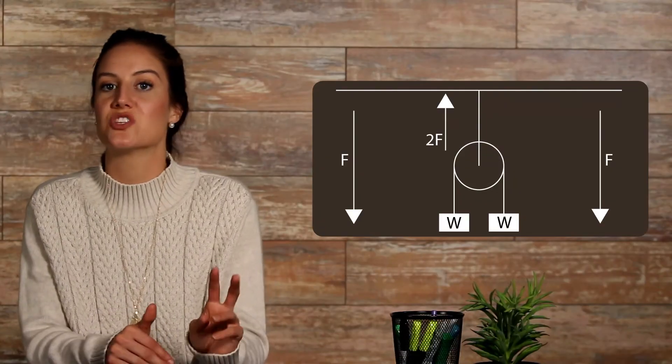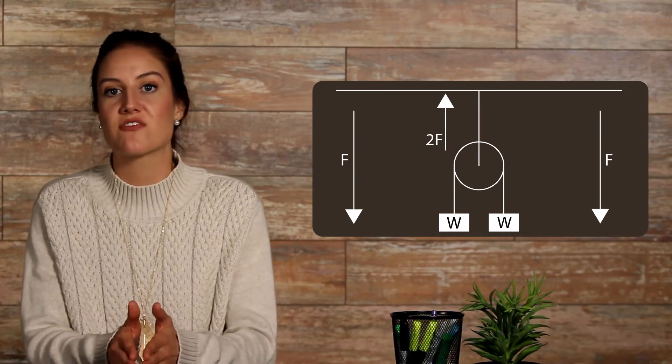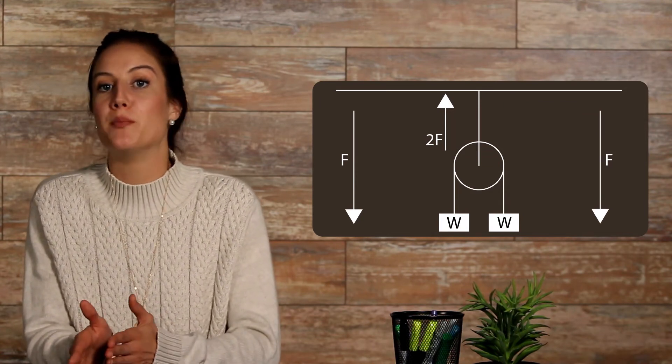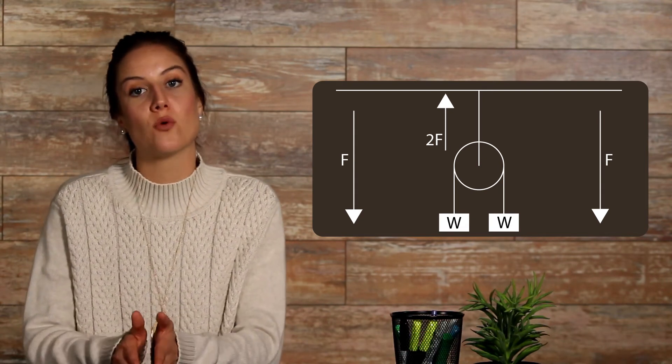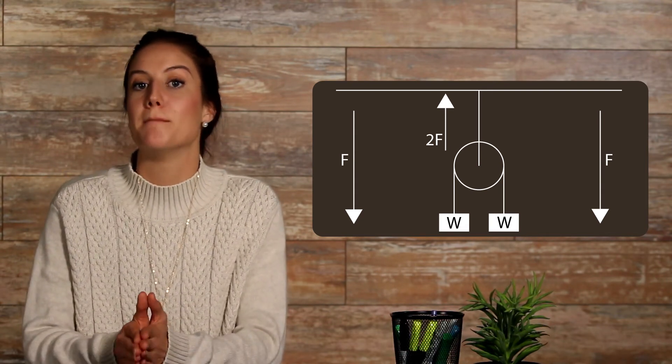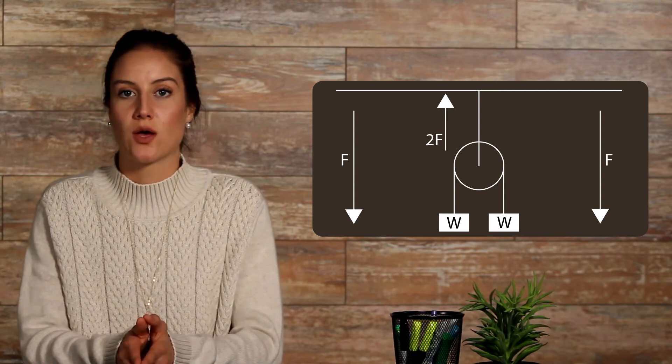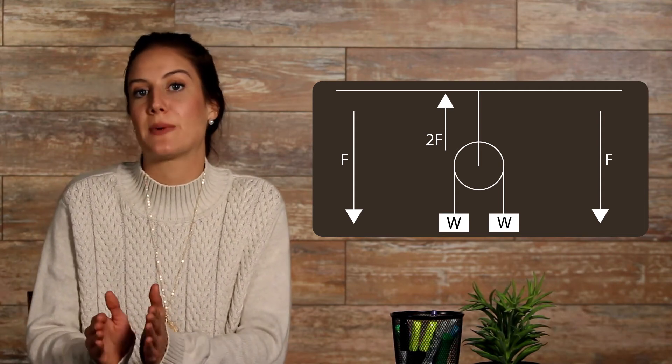Pulleys. A pulley is a wheel with a grooved rim around which a rope passes. It acts to change the direction of a force applied to the rope, and is chiefly used for lifting heavy weights. An ideal pulley has no mass or friction. In a simple configuration with two equal masses suspended from a single pulley, the force on both rope segments is equal to F. Therefore, the force on the cable holding the pulley up must be 2 times F. More complex pulley systems can also be analyzed by applying the equations of static equilibrium.